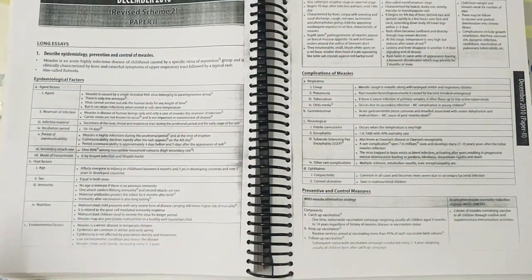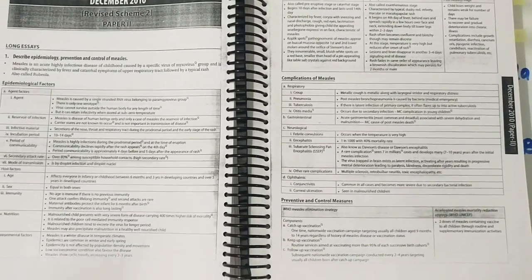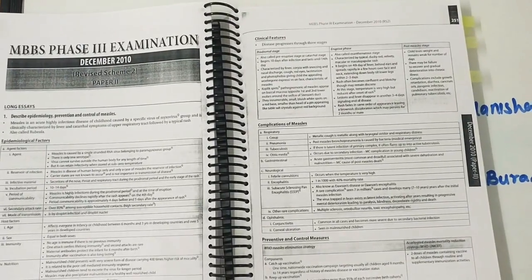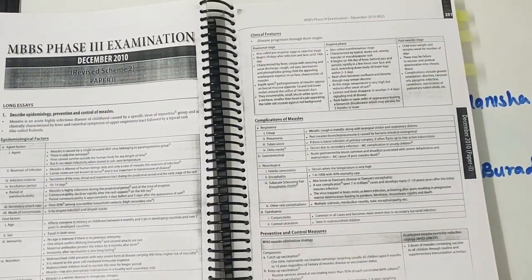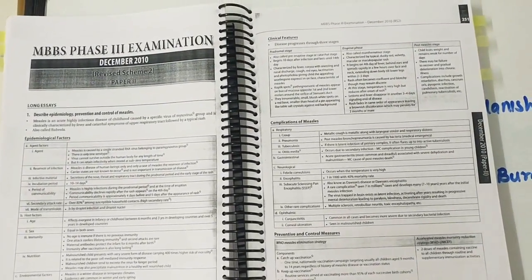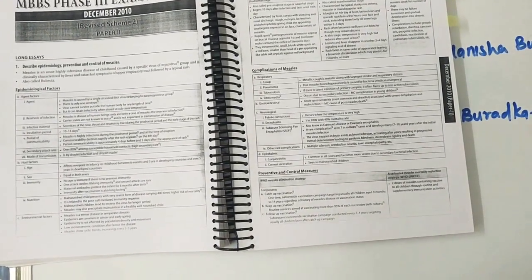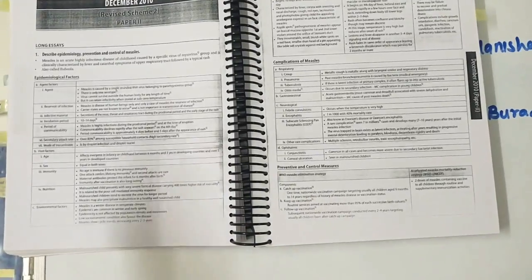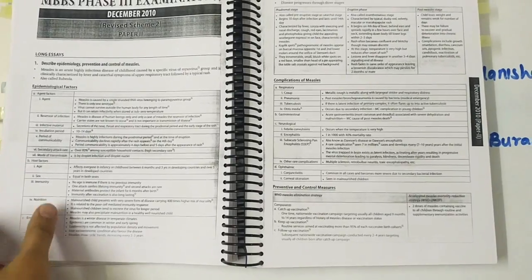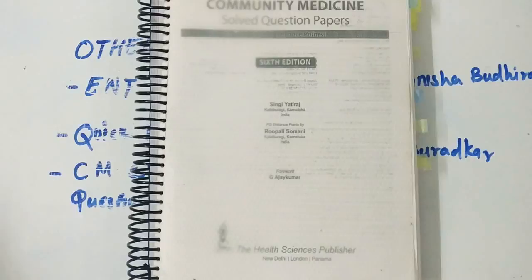The question and answer format is very easy to read and remember. Unlike Park, where all the things are in paragraph format and we don't know what we have to write, here some topics that you have to read from two different chapters in Park to make your own answer are consolidated, and we get all the necessary points in one answer only. So this is a pretty good book for PSM if you want a better option.